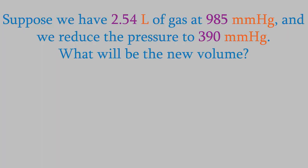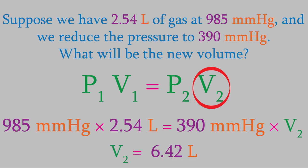For example, if we have 2.54 liters of a gas at 985 millimeters of mercury, and we then drop the pressure all the way down to 390 millimeters of mercury, what will be the final volume? In order to find out, we'll just plug all this data into Boyle's Law. The thing we're trying to determine is V2, so we'll solve for that. When we do, we get a result of 6.42 liters. Notice that it wasn't necessary to convert millimeters of mercury into atmospheres. As long as P1 and P2 have the same unit, it doesn't matter what that unit is. As Boyle's Law predicts, the volume went up when the pressure went down.